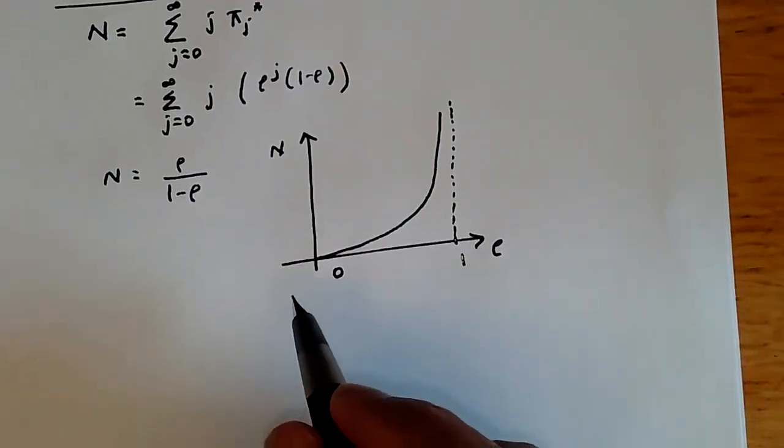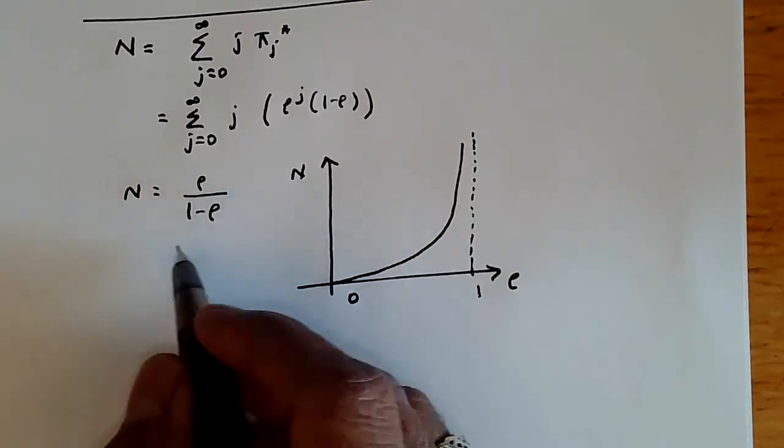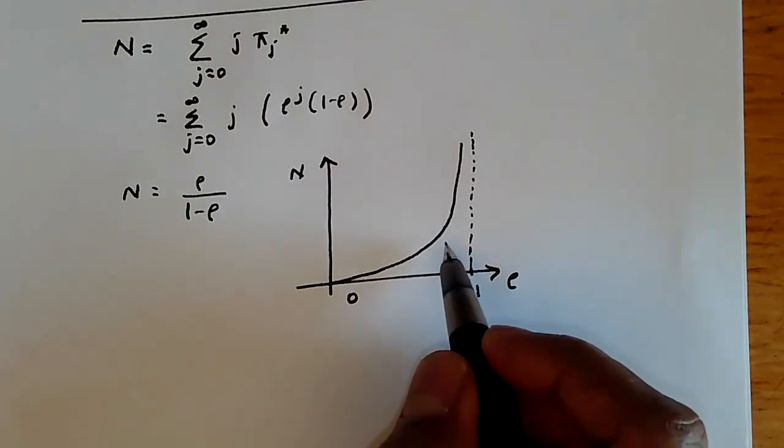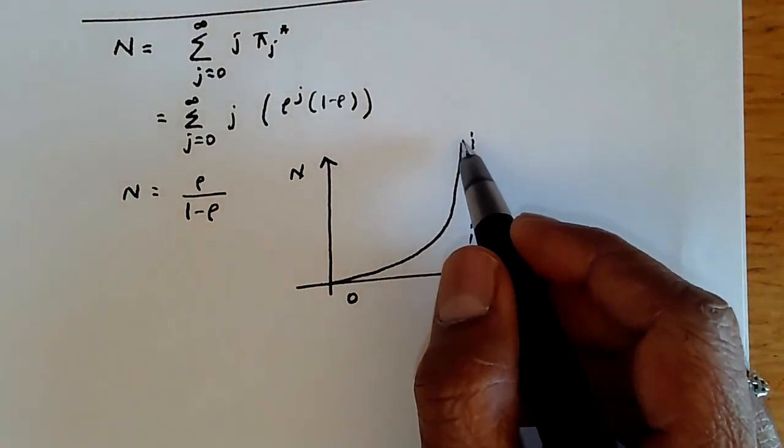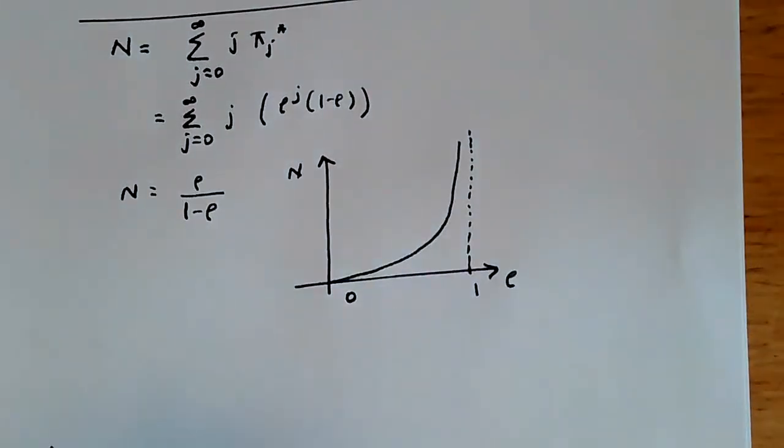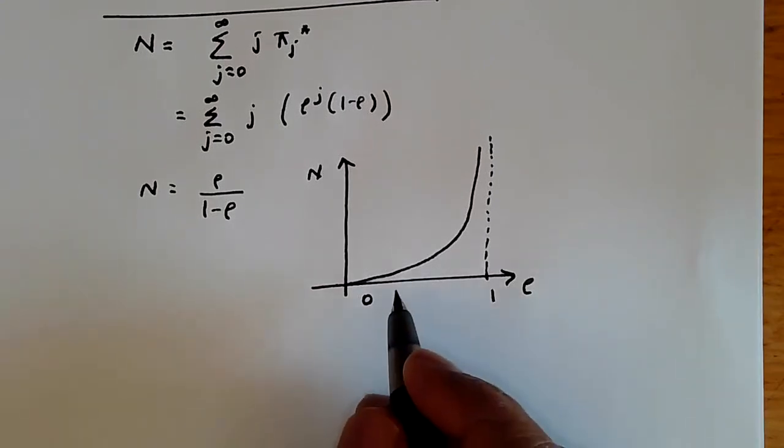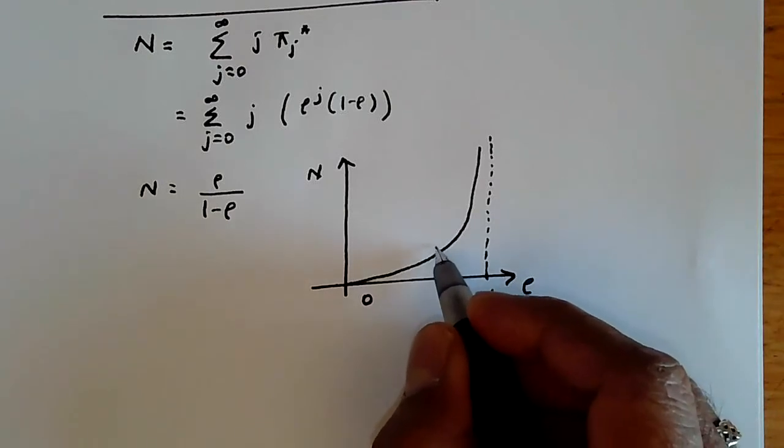What it says is that as we increase utilization of the server closer and closer to 1, as lambda gets closer and closer to mu, the number of entries in the queue, the number of customers waiting for servers, is going to actually grow asymptotically towards infinity. This is why in any queue, as utilization increases, the waiting time goes up very fast. In fact, what we see over here is this kind of interesting behavior.